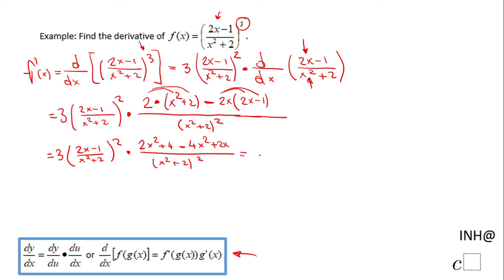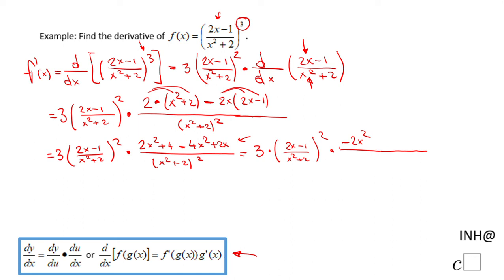We have 3 times the quantity (2x minus 1) over (x squared plus 2) squared. Now we do the simplification: 2x squared minus 4x squared gives us negative 2x squared, plus 2x, plus 4, over (x squared plus 2) to the second power.